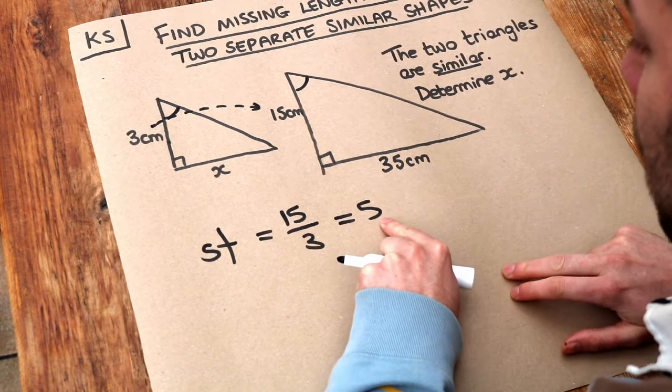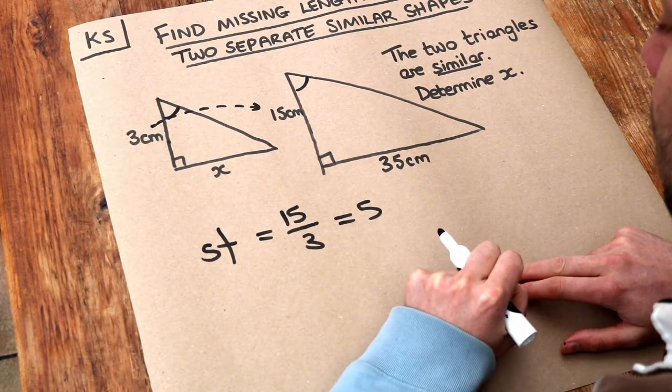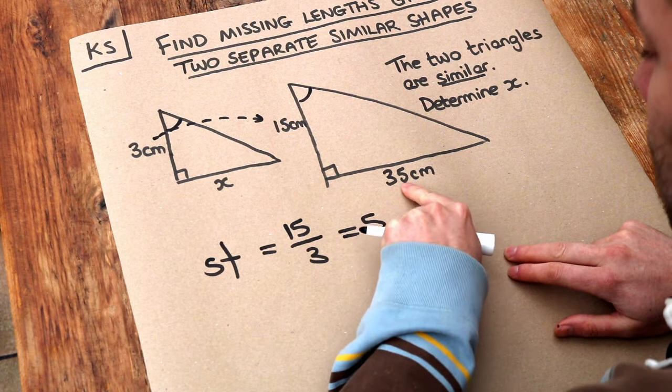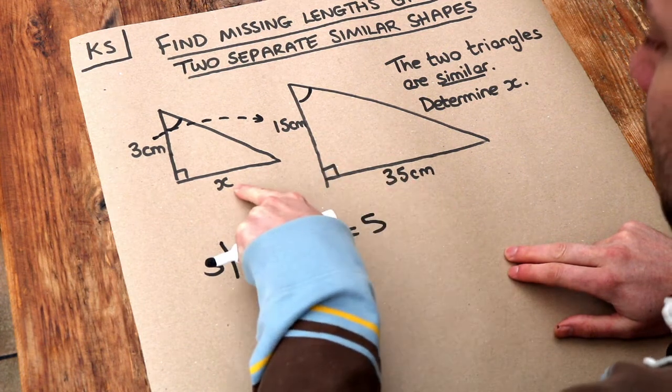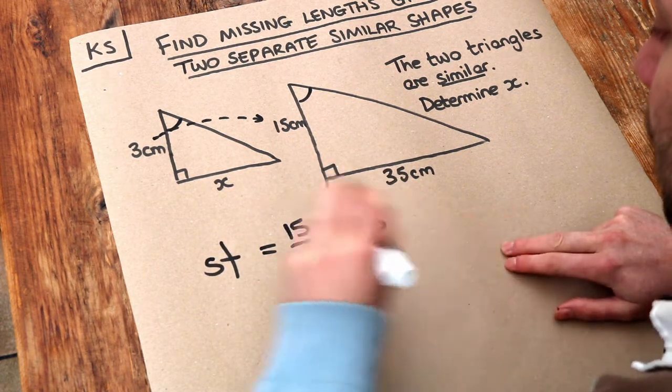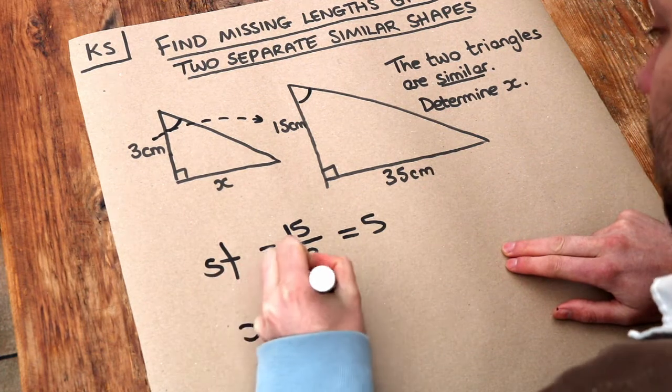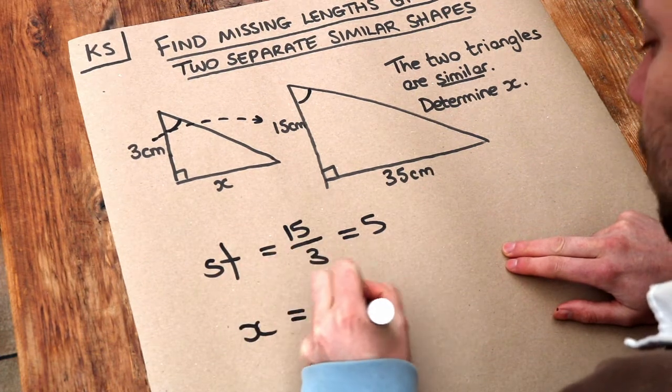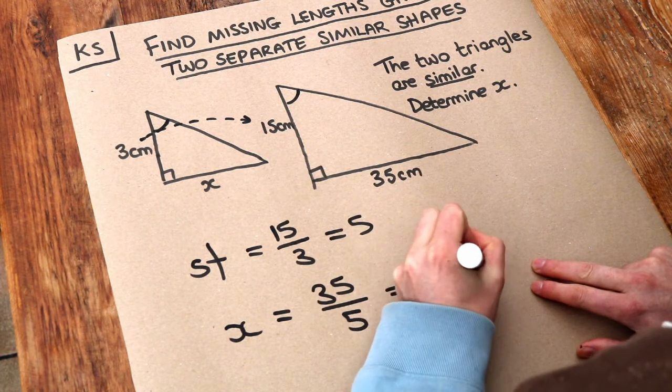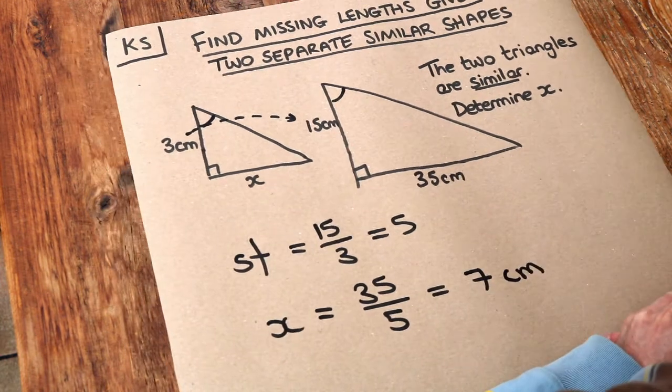Now once we've got that scale factor 5, we can scale any of the other lengths. So we know for example that that 35 is 5 times bigger than the x, and so to get x we can just do 35 divided by that scale factor 5, and that gives you 7 centimeters. And that is the final answer.